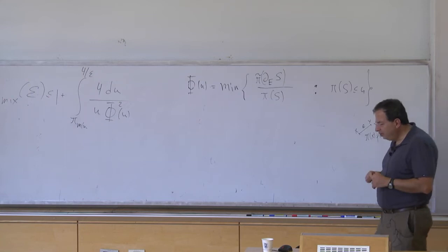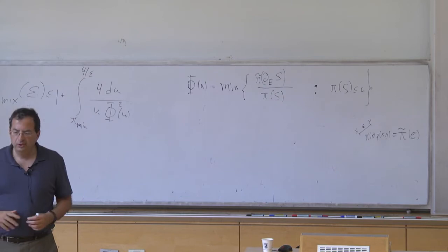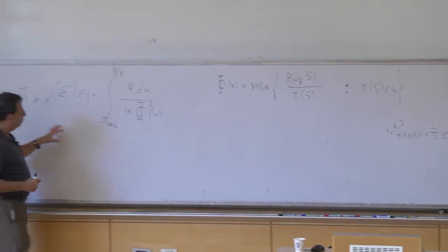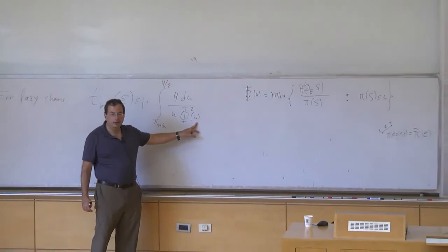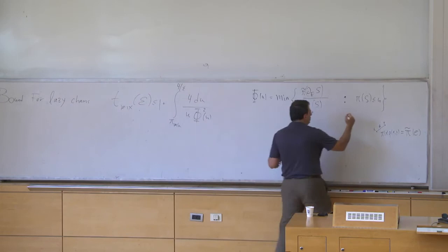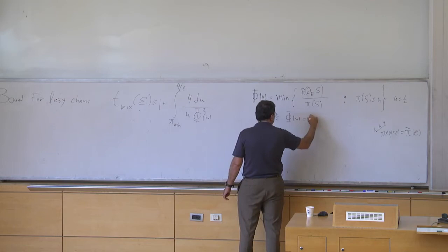I'm going to focus on the reversible case, but with more care everything works — in the paper with Ben Morris it's written for general chains. So pi is just proportional to degree. We do this for u less than one half; for u bigger than one half we define phi(u) to be phi(one half). When the set is very large, the boundary could be small, and we want this truncation. With this formula the integral bound is true.